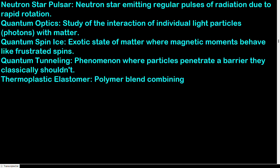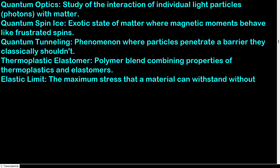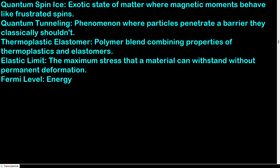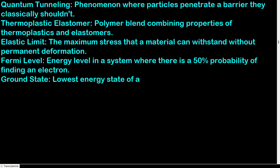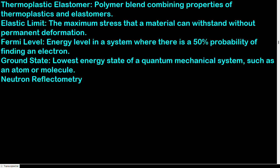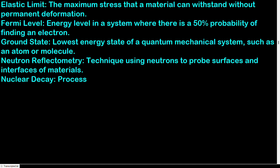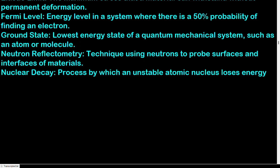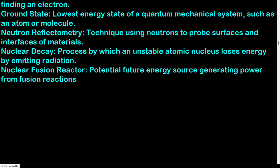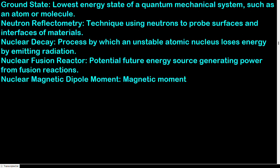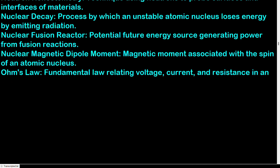Thermoplastic elastomer: polymer blend combining properties of thermoplastics and elastomers. Elastic limit: the maximum stress that a material can withstand without permanent deformation. Fermi level: energy level in a system where there is a 50% probability of finding an electron. Ground state: lowest energy state of a quantum mechanical system such as an atom or molecule. Neutron reflectometry: technique using neutrons to probe surfaces and interfaces of materials. Nuclear decay: process by which an unstable atomic nucleus loses energy by emitting radiation. Nuclear fusion reactor: potential future energy source generating power from fusion reactions. Nuclear magnetic dipole moment: magnetic moment associated with the spin of an atomic nucleus.